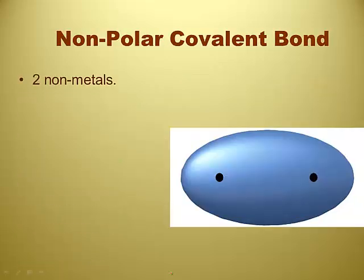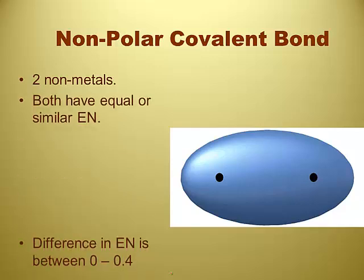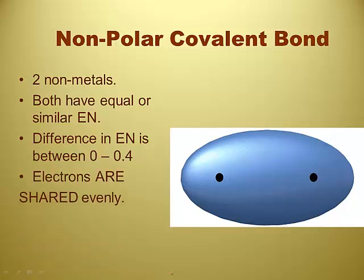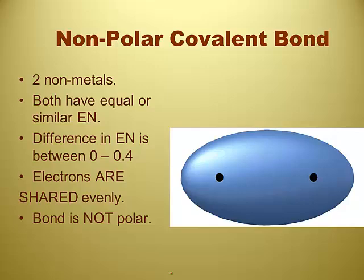Nonpolar covalent bonds are usually also two nonmetals. The difference between polar covalent and nonpolar covalent is that the nonpolar covalent have such a small difference — somewhere from 0 to 0.4 — that the electrons wind up getting shared evenly, and this bond is not polar. So no dipole moment, no sigma positive or sigma negative, no vector arrow. The bond is created solely by electrons being shared and passed between the atoms continuously.